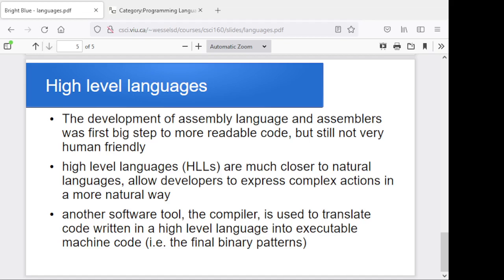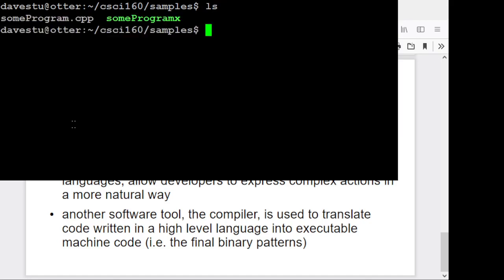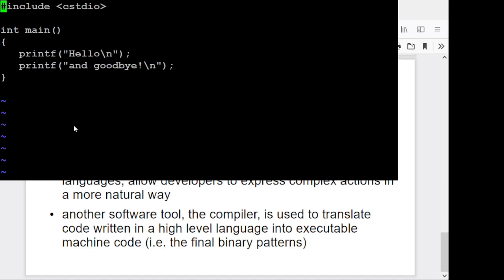So I'll just give you a kind of a quick look at what that might actually look like. Don't worry about the editor that I'm using here, and don't worry too much about the code that I show you. I'm just going to give you a quick look. So the program in question here was this some program dot CPP, and the dot CPP just indicates that it's a C++ program.